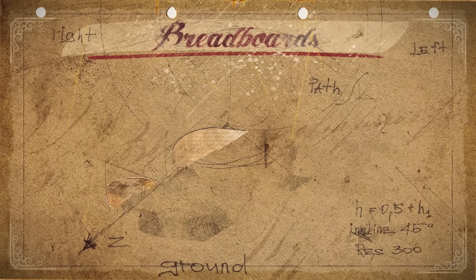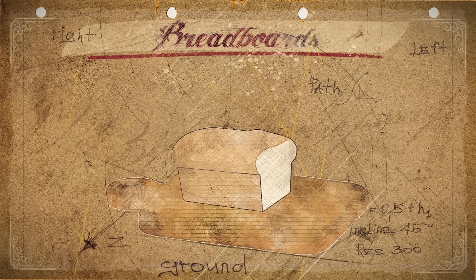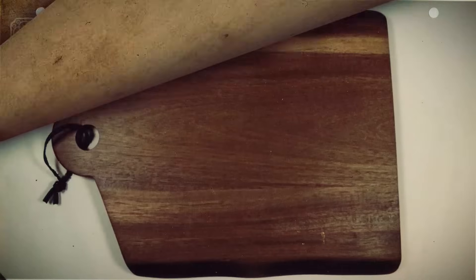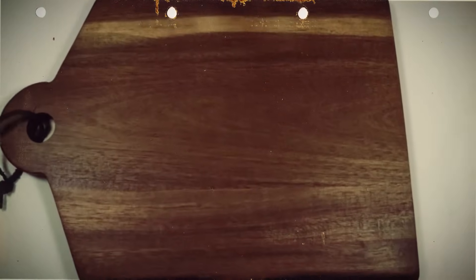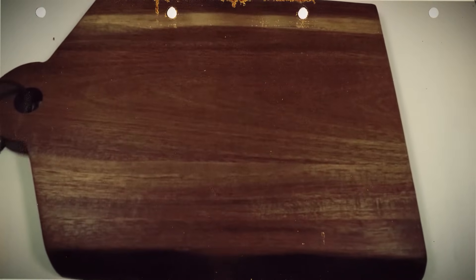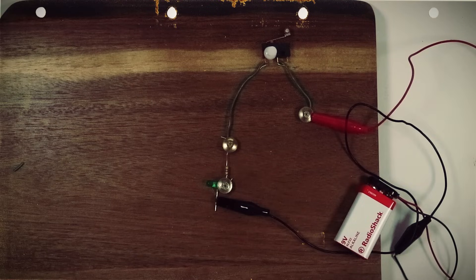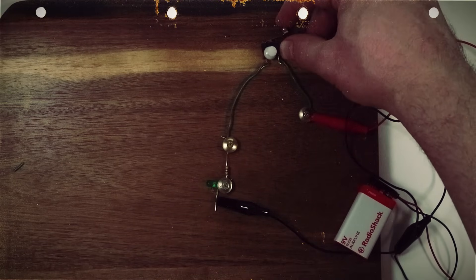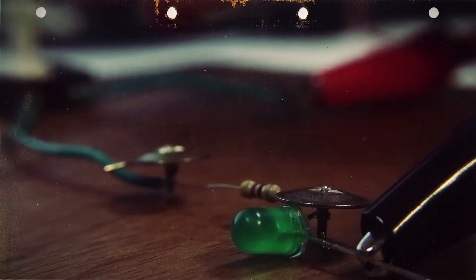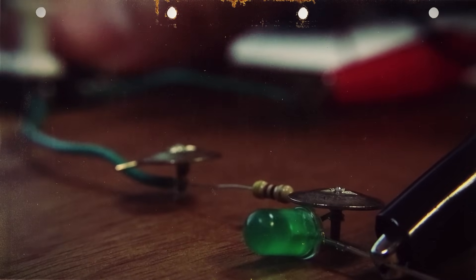Now you may want to envision breadboards as a thick piece of wooden board for which to cut bread upon. And that would be absolutely correct. Early electronics enthusiasts would use these kitchen tools as a platform for building electronics. They would either use nails or thumbtacks to run wires to different electronic components.